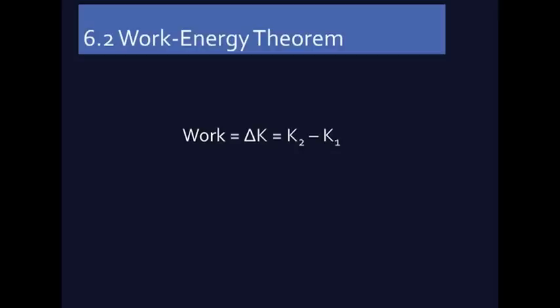So if the end kinetic energy is K₂ and the beginning kinetic energy is K₁, then the amount of work done is K₂ minus K₁, delta K, the change in kinetic energy. The amount of work done is closely related to the difference in kinetic energy.